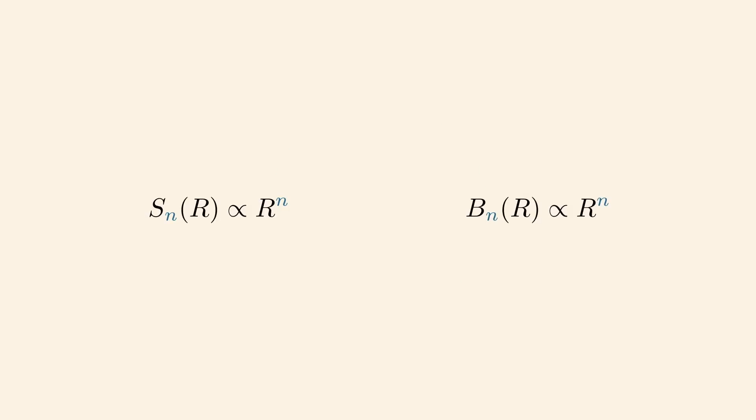You probably intuitively know that these values of Sn and Bn should be proportional to r to the n, but can you show why?